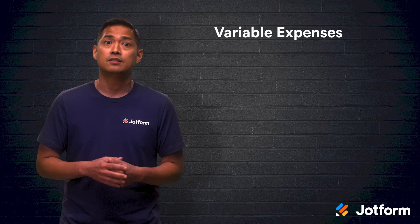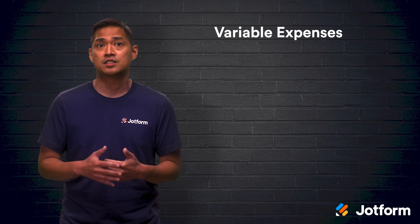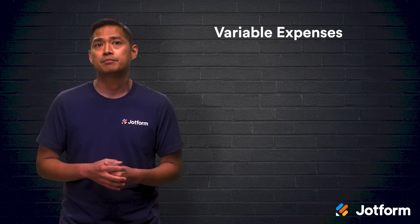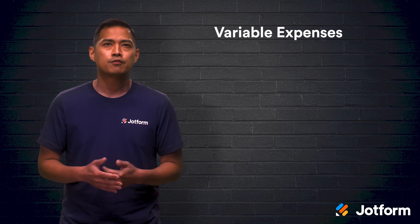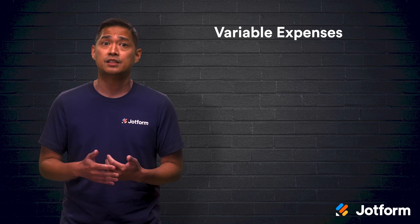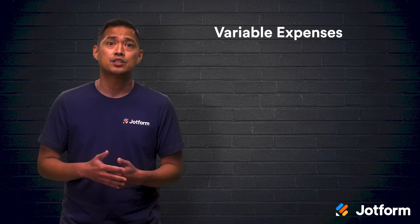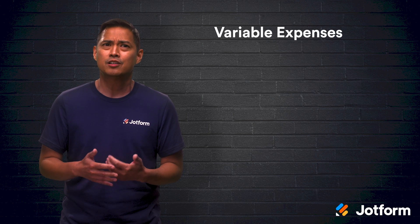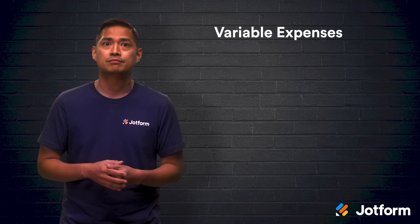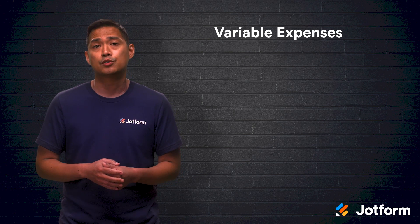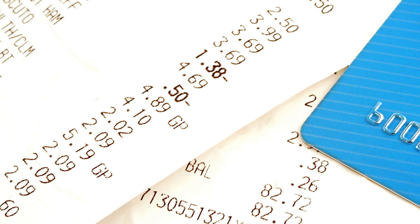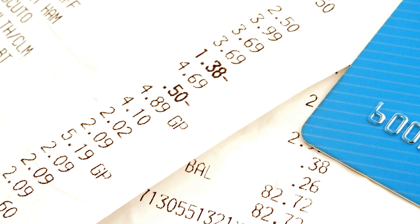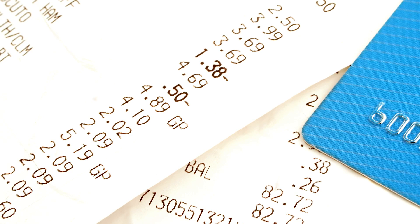Variable expenses are up next. These expenses, unlike fixed expenses, change each month. This includes electricity and grocery bills. For businesses, variable costs also include utilities and other discretionary expenses — those that aren't vital to keeping the doors open, but are nice to have. This could include the owner's salary or new equipment. If income or revenue is high, you can easily make these extra expenditures. If money is tighter, you'll need to reduce your variable expenses.